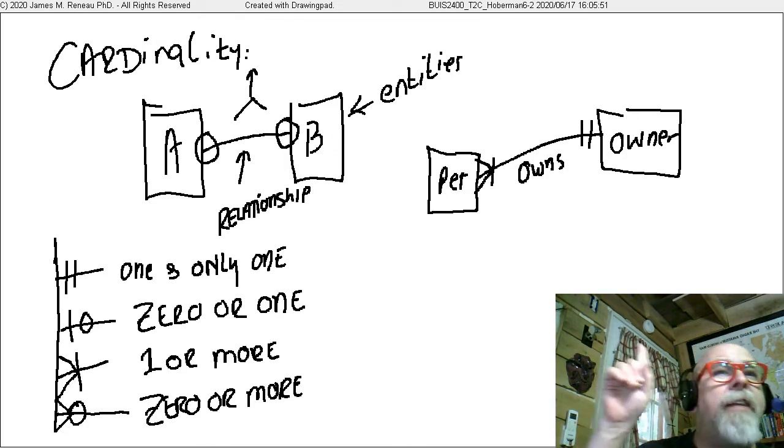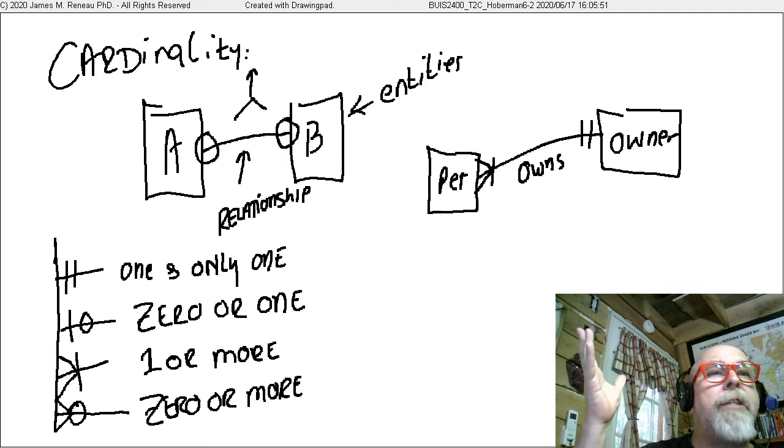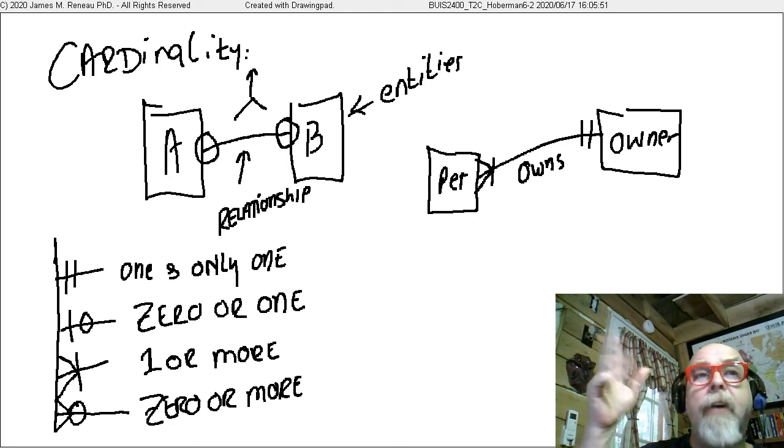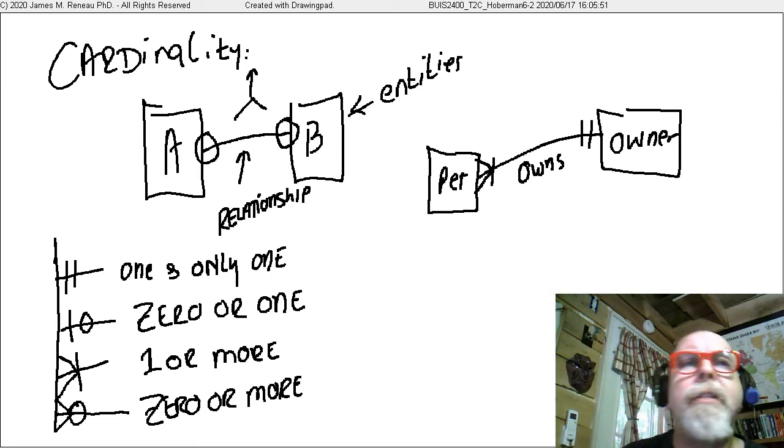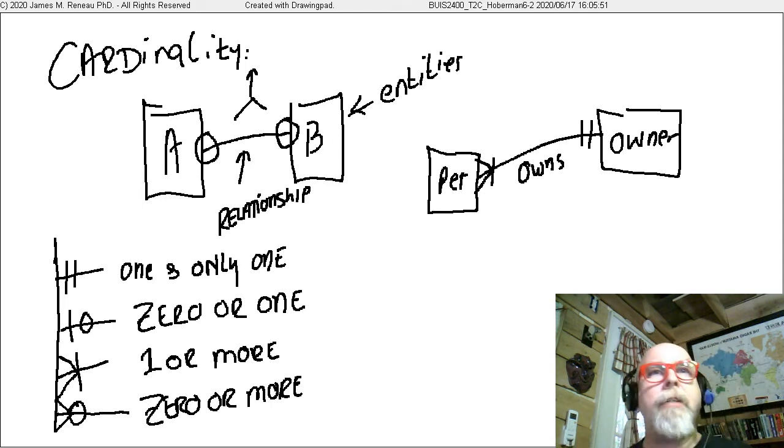Now, could I have done this diagram differently? So maybe I'm modeling this. This is subject area model, real high level kind of thing. And I went to the client and said, so this is what I understand your business to be. And the doctor would say, well, I don't know. You know, instead of calling them owner, can we call them customer? It's easy enough to do because I can just erase owner and write customer in.